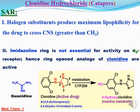الـ clonidine ده بيحصل له metabolism بالـ cytochrome P450 2D6 ويدي الـ 4-hydroxy clonidine وده inactive.